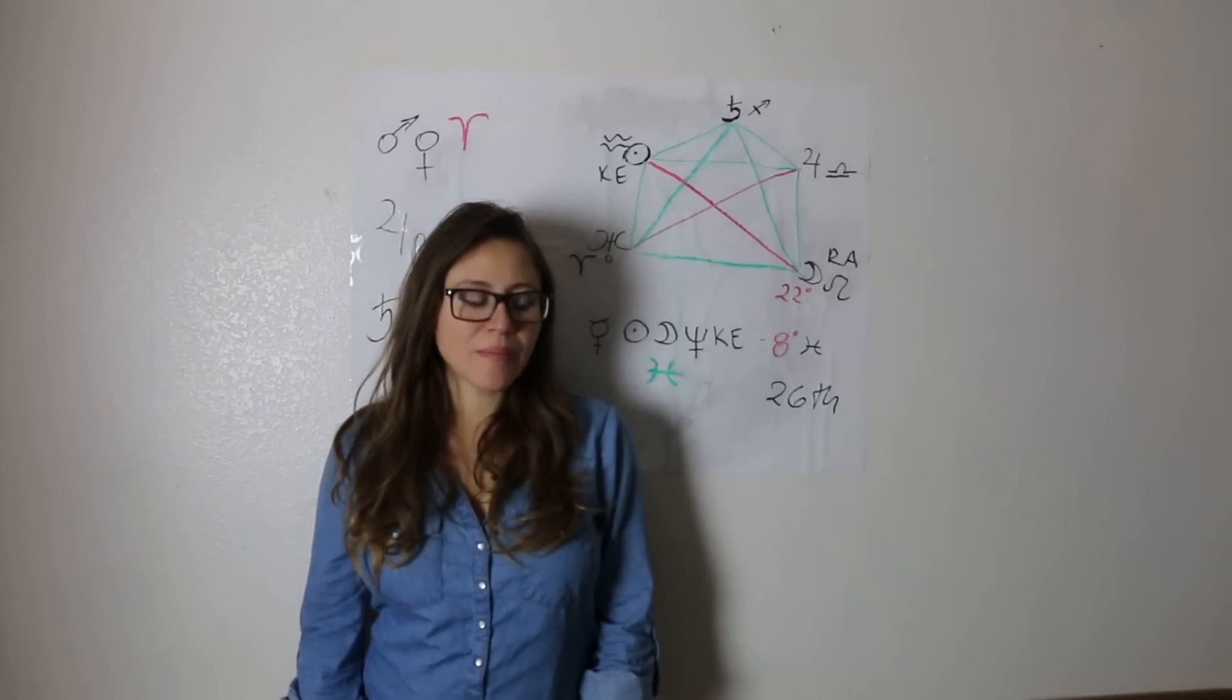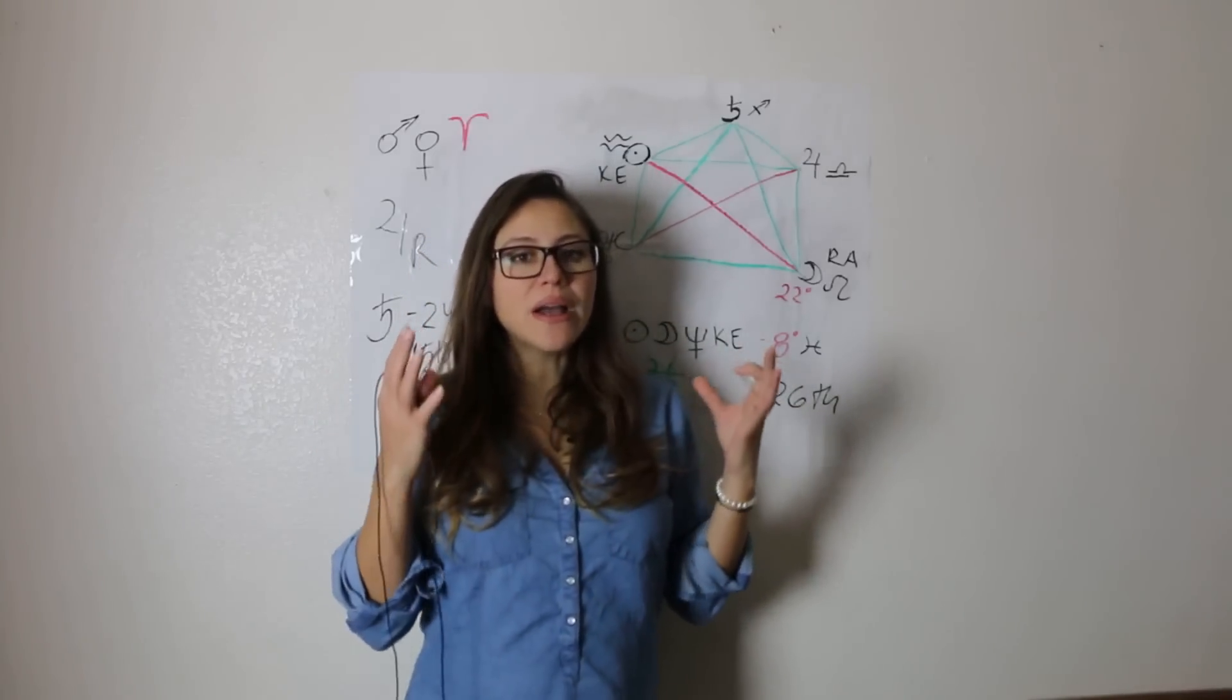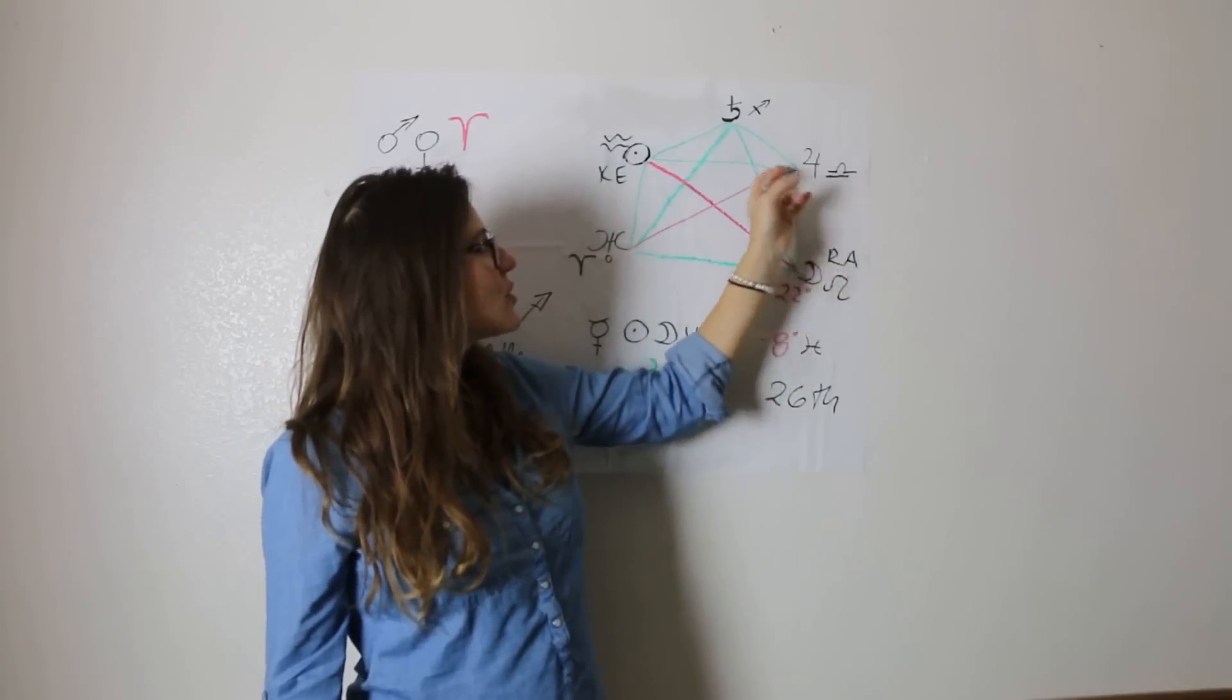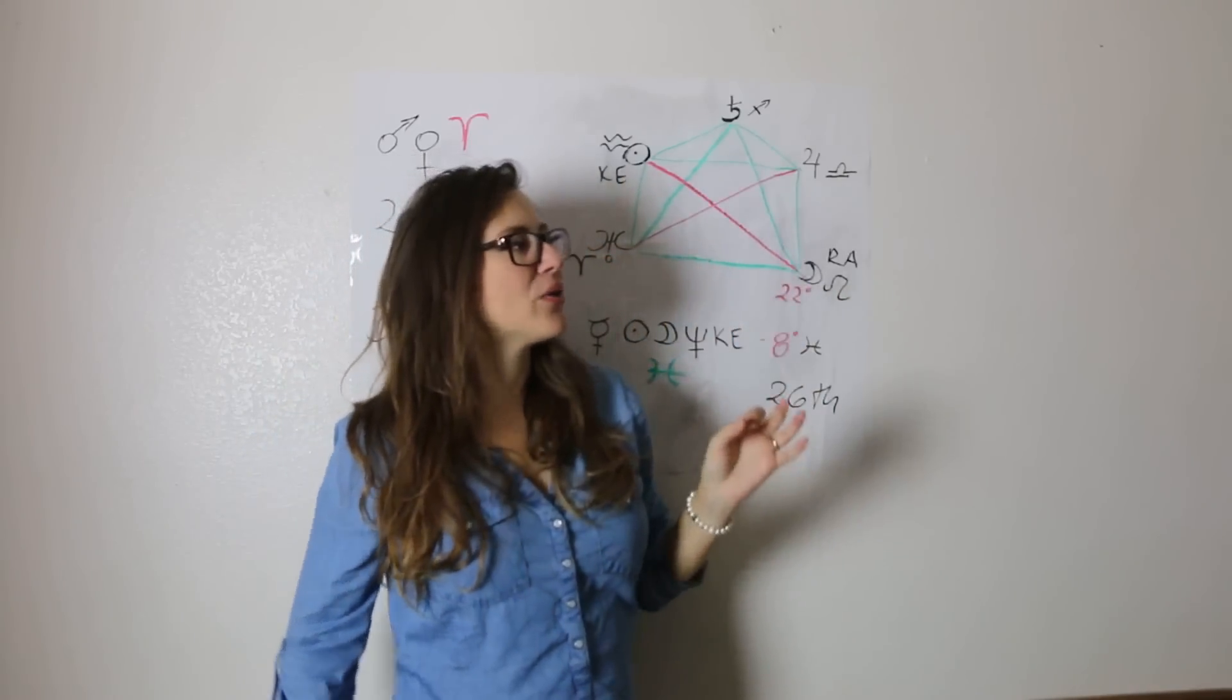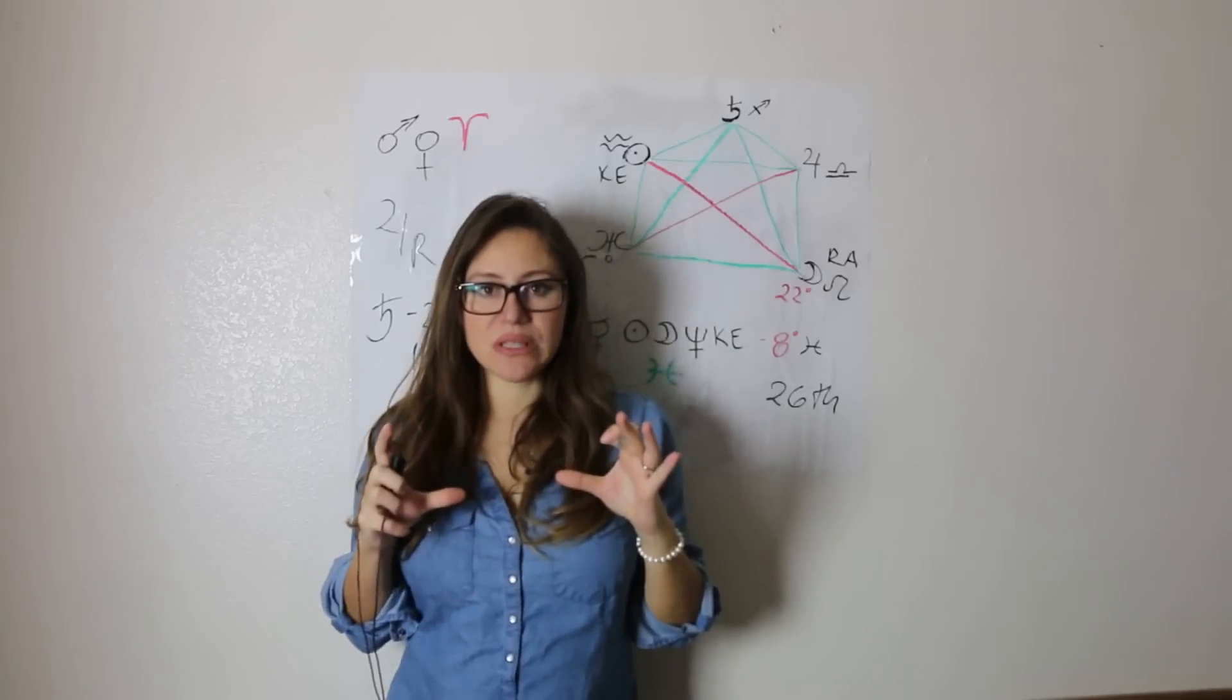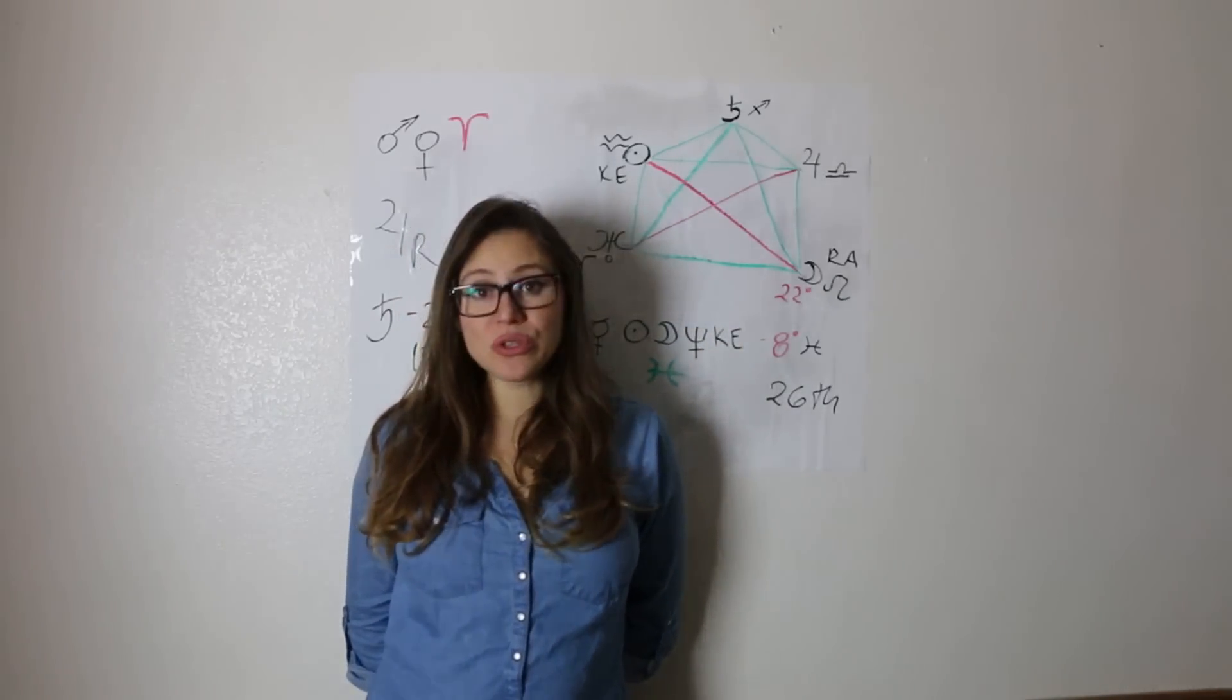This lunar eclipse with its beautiful grand trine in fire can bring inspirations, realizations, and motivations that lead you. Some of you might feel it in January, some in February, some in March. Something directs you on a new path or a vision you've had starts manifesting in certain ways. Circumstances align for you to tap into this potential of the grand trine and manifest it materially because the moon is part of a mystical rectangle with Jupiter, the Sun, and Uranus. Rectangles are about taking an inspirational idea and making it a reality because the square shape is about physical, tangible manifestation.